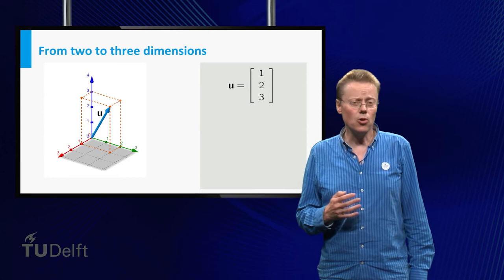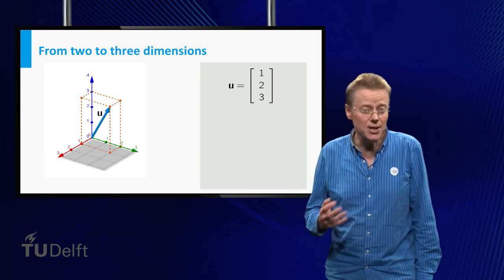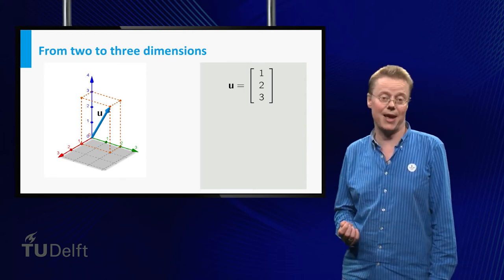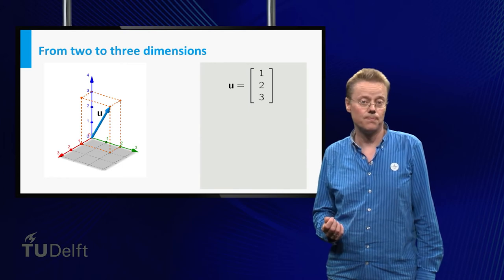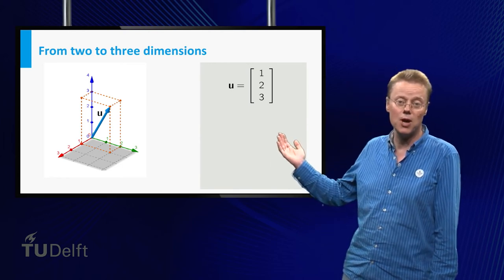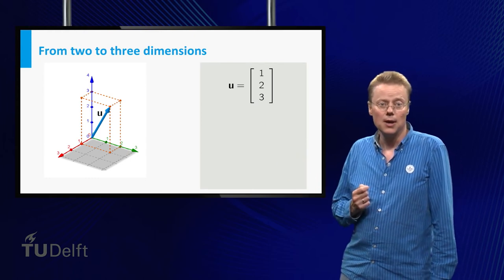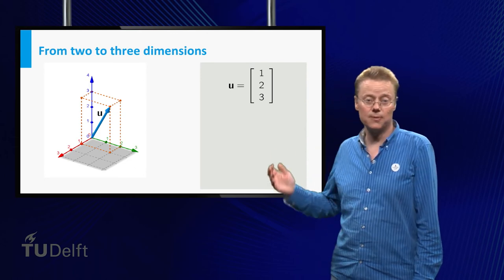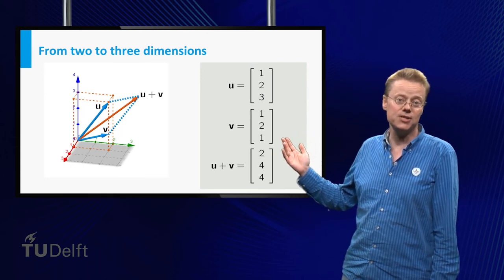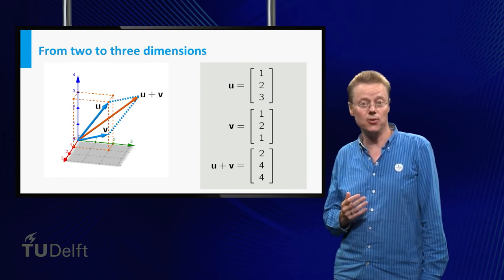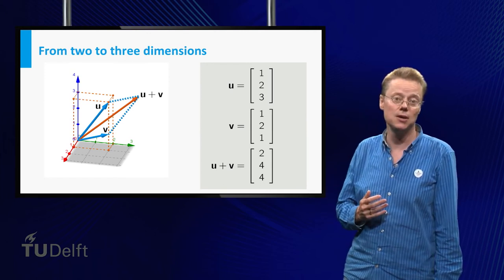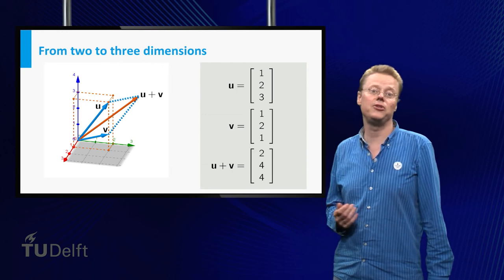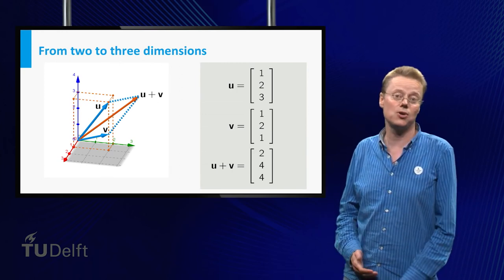The examples up till now were all given in two dimensions. In three dimensions you can take exactly the same approach — a vector has a direction and a length and can be represented by an arrow. Here you see the vector with endpoint (1, 2, 3). Adding the vector (1, 2, 1) leads to the vector (2, 4, 4). This can be seen by moving the second vector's tail to the first vector's head and traveling along the connected arrows. Alternatively, the sum can be easily obtained by adding just the components of the vectors.